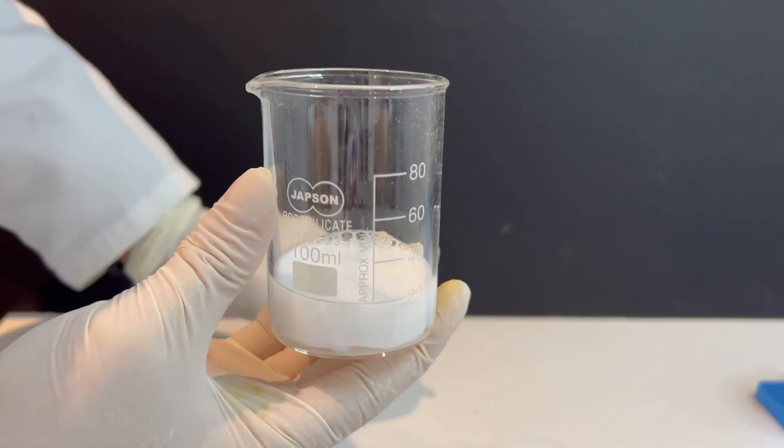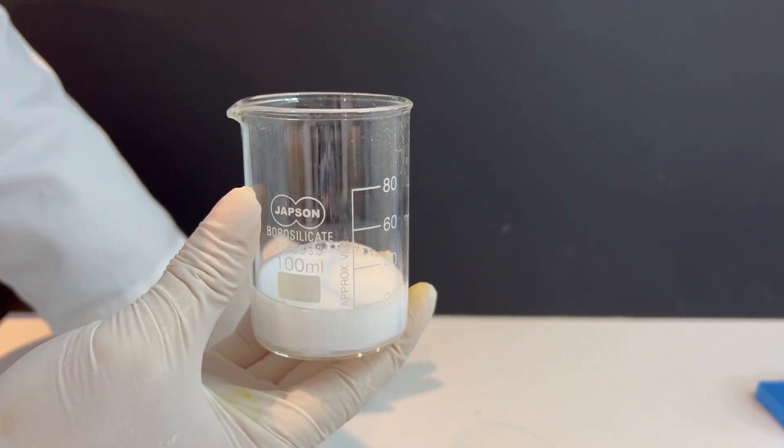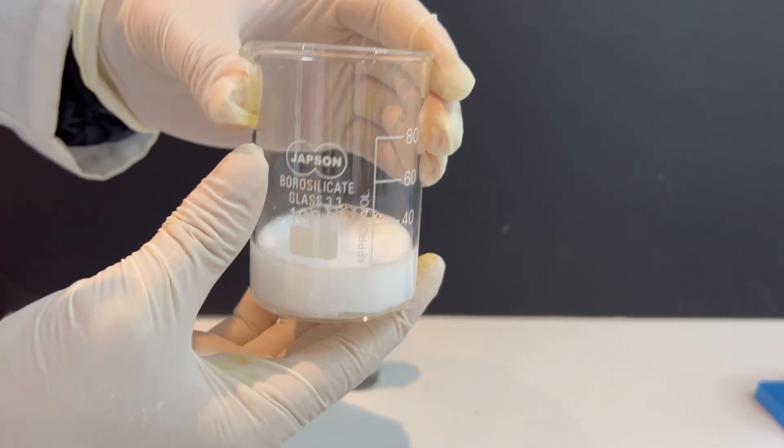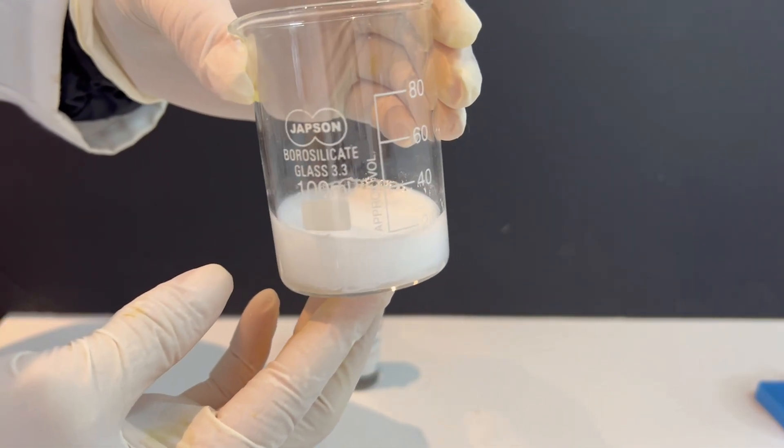You will see a white precipitate forming. This is silver chloride, which is insoluble in water.